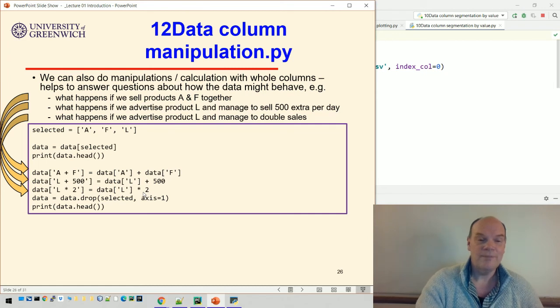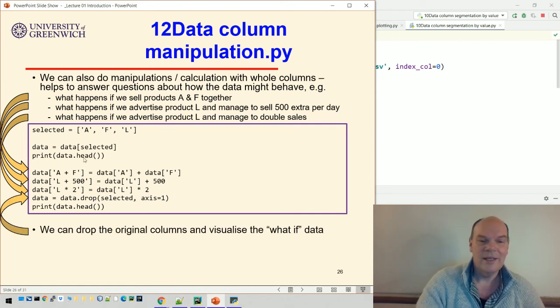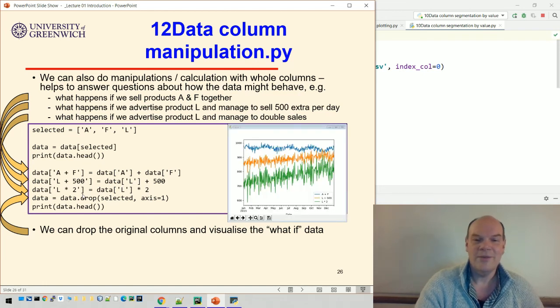So now we've got, and then we can drop the original column. So now we've got a data frame where we started with one set of columns, we've done some manipulations and dropped the originals. So we've now got these three different things. You can see A plus F is this blue line at the top. L plus 500 is this orange line. L times two is this line here.